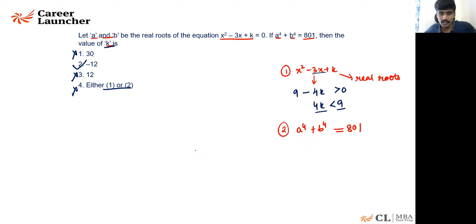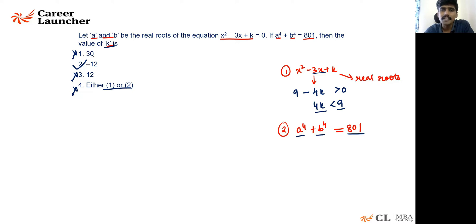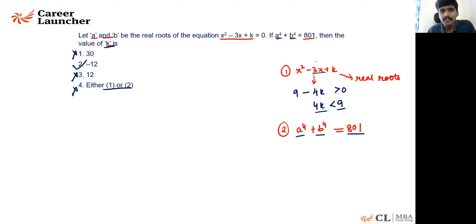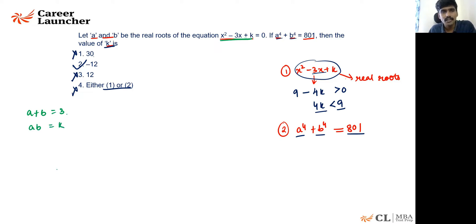If you'd like to see the full solution: from the quadratic x² − 3x + k, we know the sum of roots a + b = 3 and the product of roots ab = k. We're given a⁴ + b⁴ = 801. We also check whether a and b could be integers — testing 4⁴ + 5⁴ and 3⁴ + 4⁴ shows neither equals 801, so a and b are not both integers.